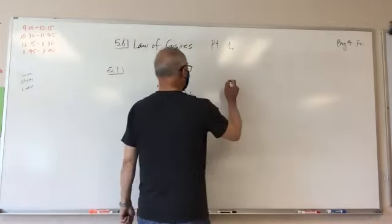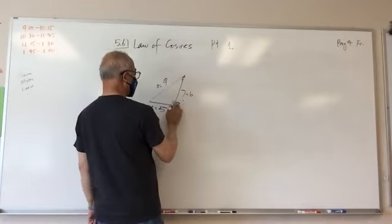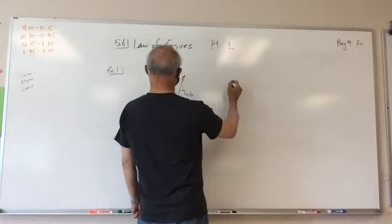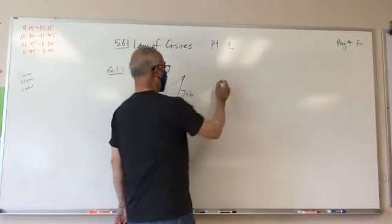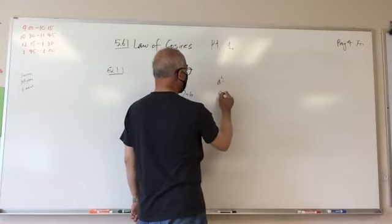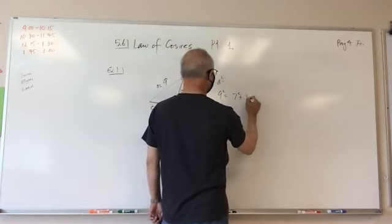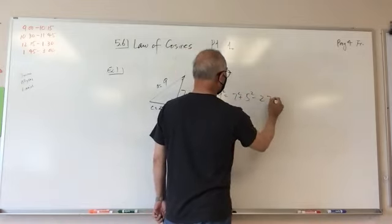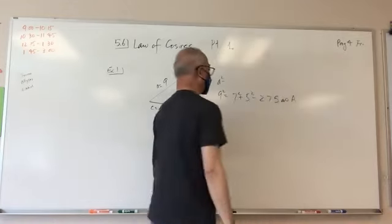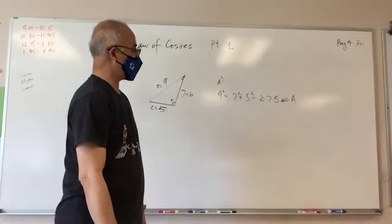So we have to use the Law of Cosines. Let's call it a. So a squared, which is 9 squared, equals 7 squared plus 5 squared minus 2 times 7 times 5 cosine a. From this I can find out what a is.